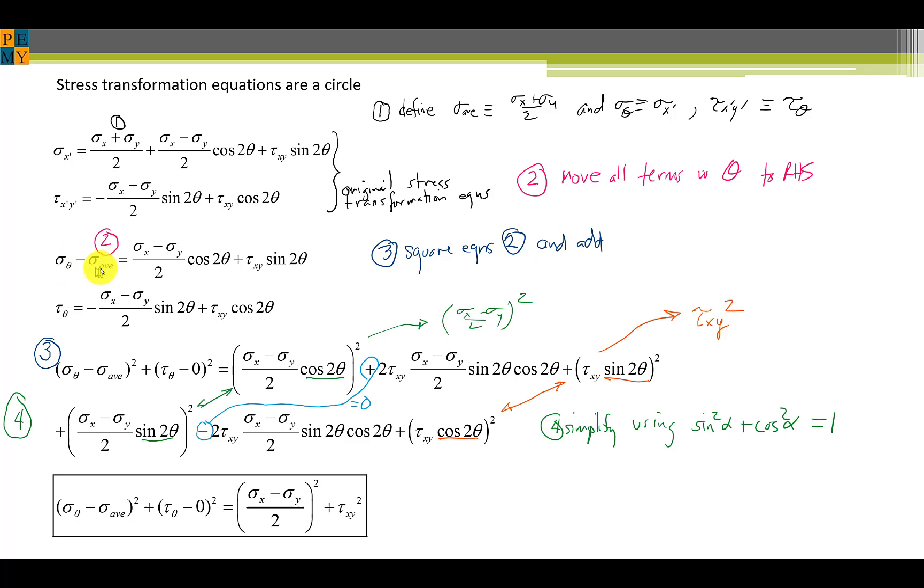Next we'll square these two equations and add them. This term squared, sigma theta minus sigma average is squared here, plus tau theta squared is the same as tau theta minus zero. We're going to use zero because at the center of the Mohr circle, the shearing stress is centered about zero. It's symmetric, positive and negative, in other words.